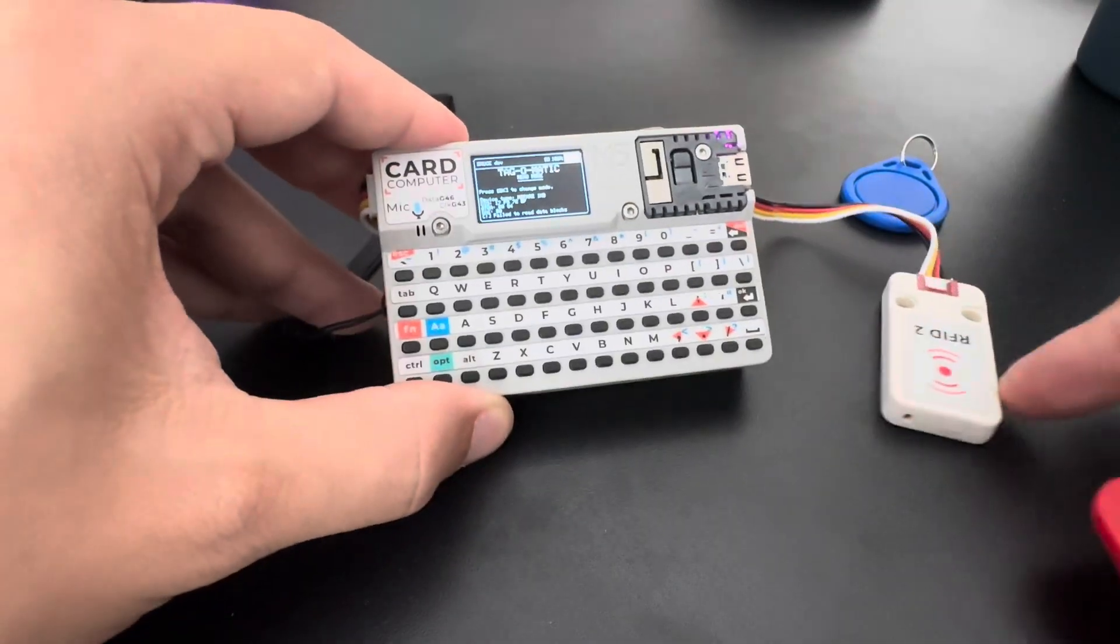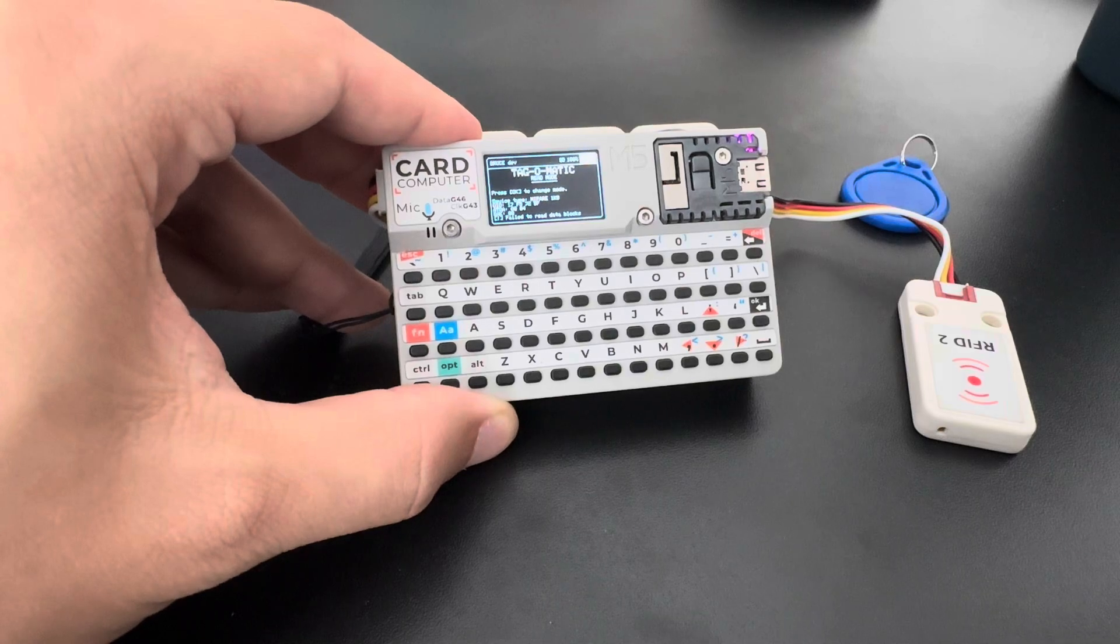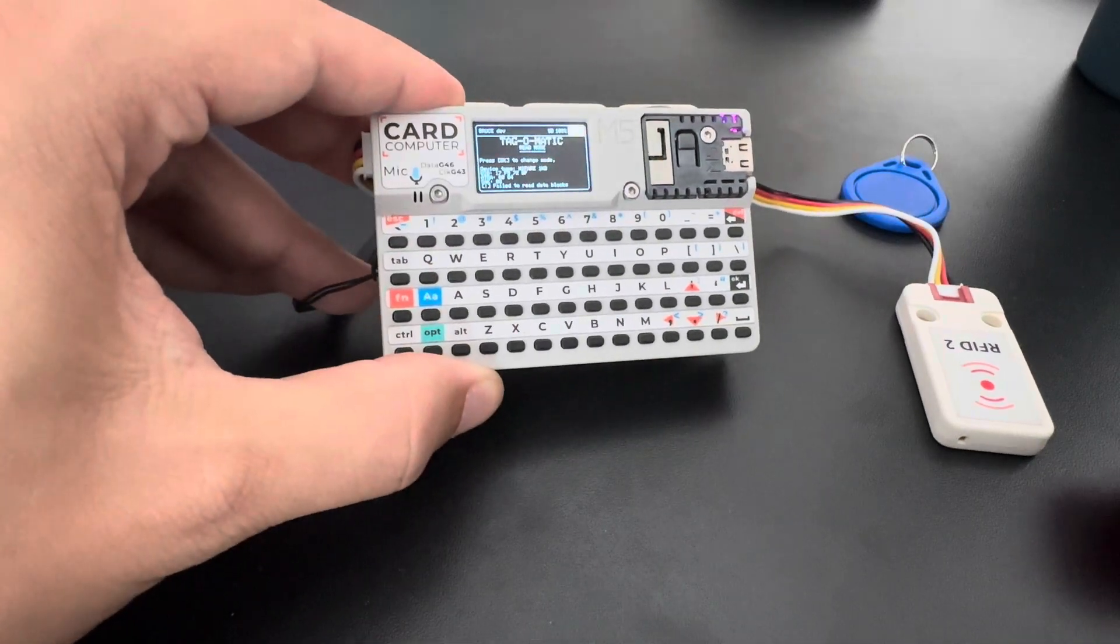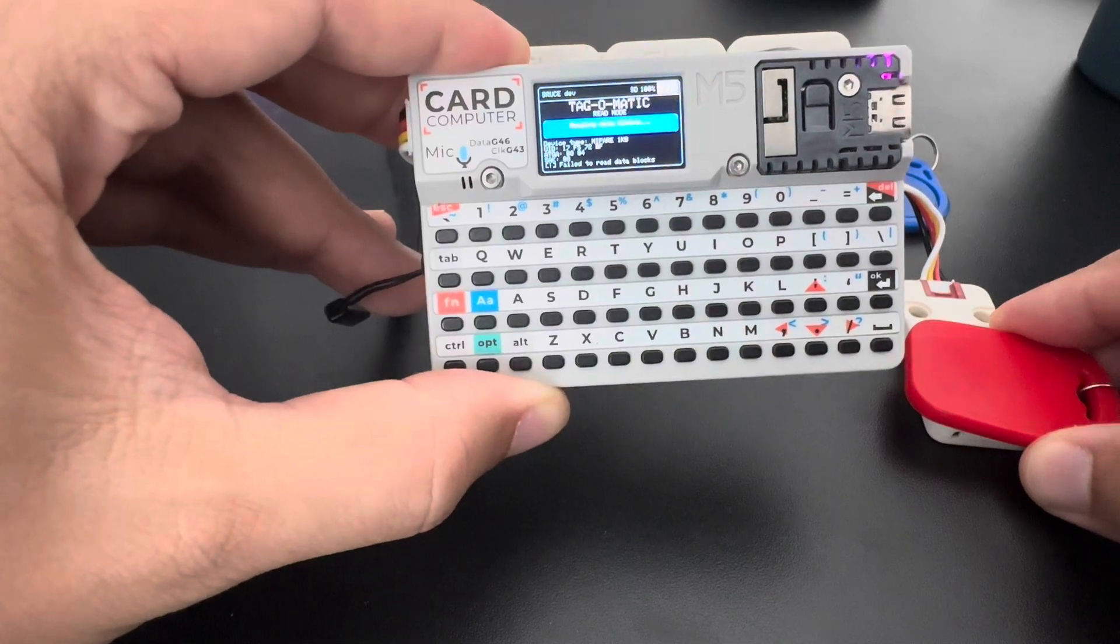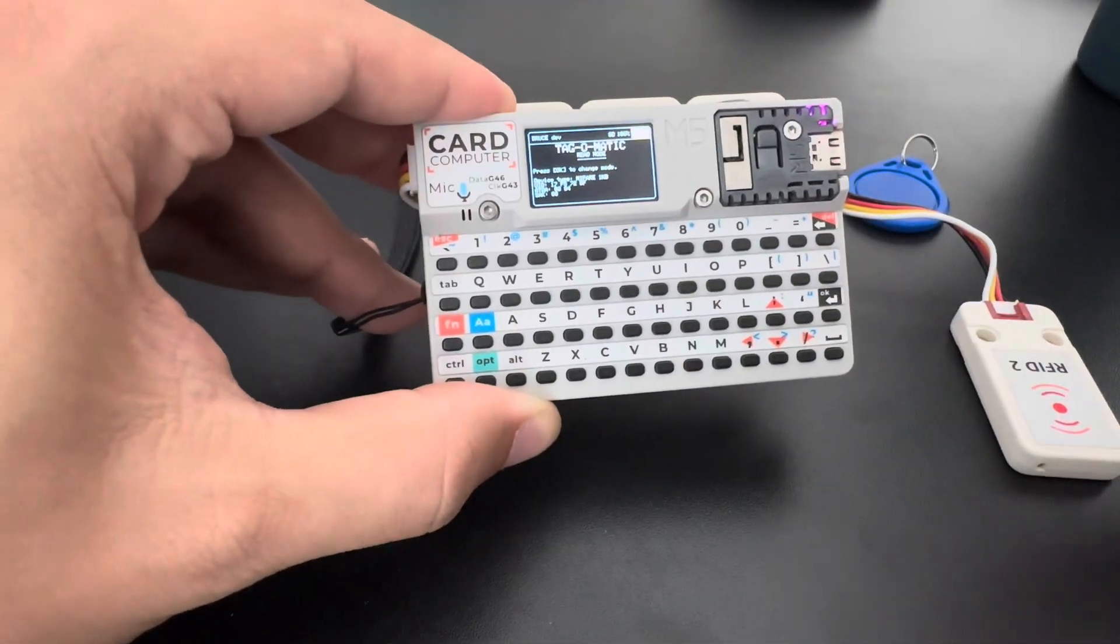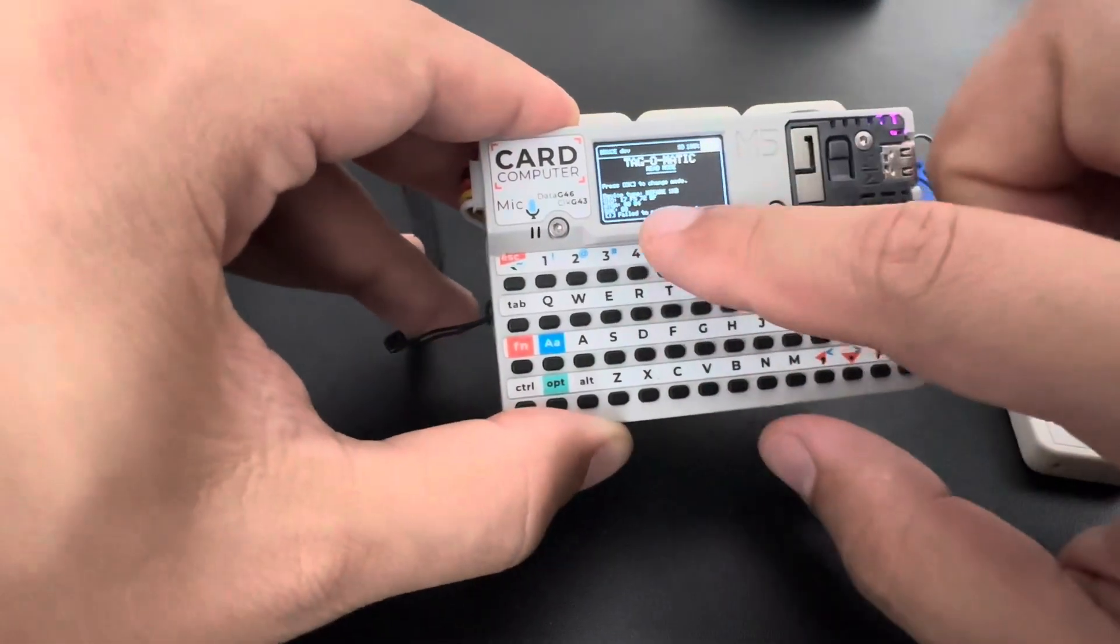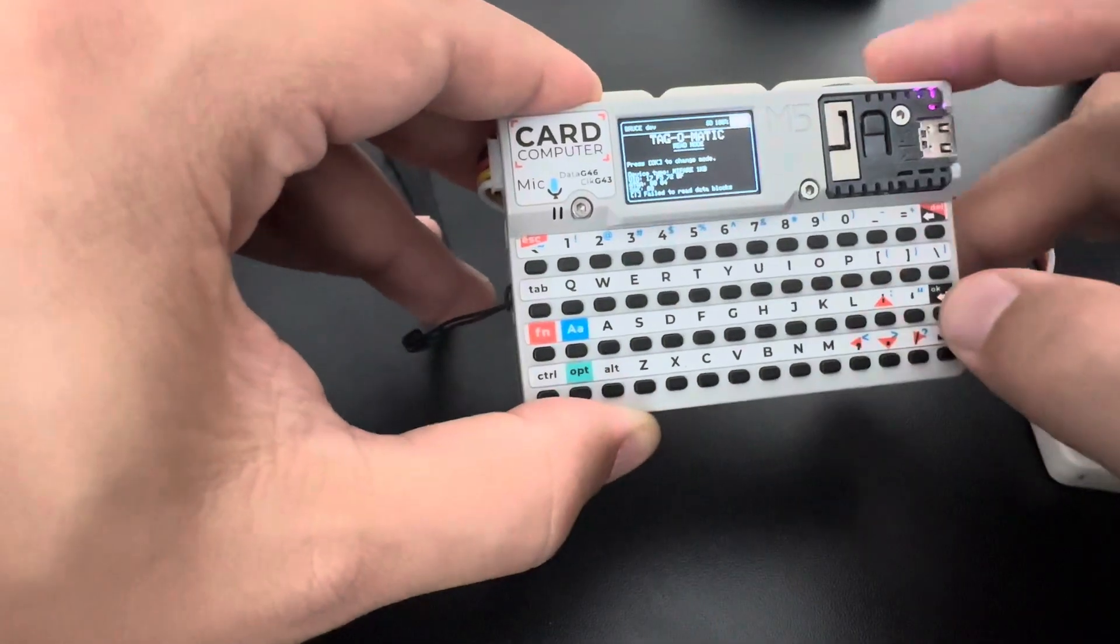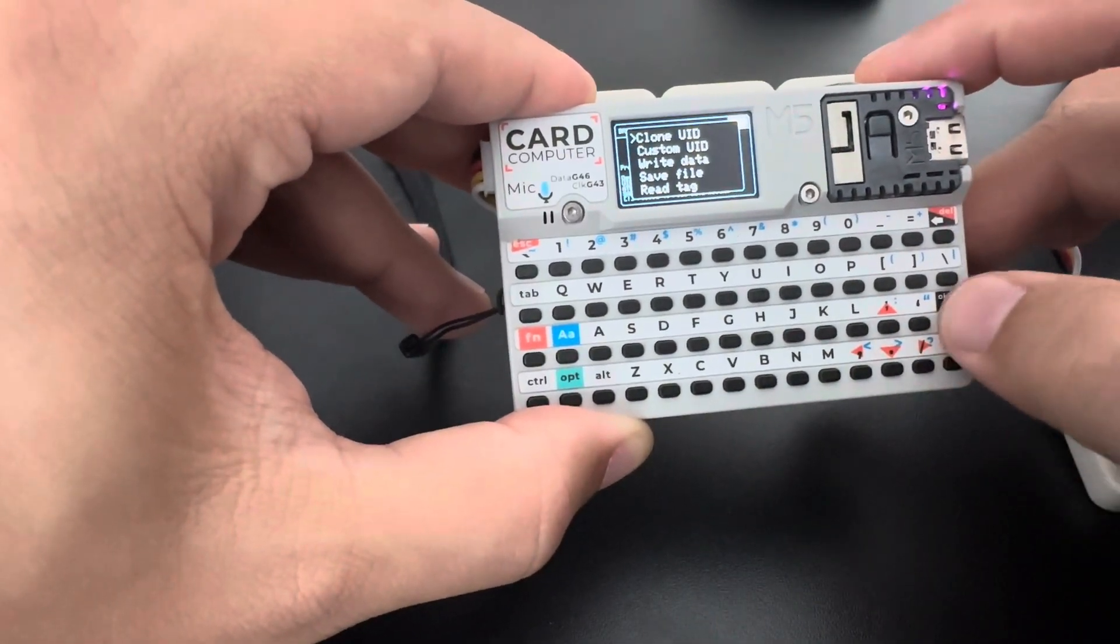I put the tag near the reader and took it off quickly, so I have to put it here and wait for the data blocks to be fully read. For the purpose here I don't need it, so I can do this and it's fine. I just need the UID. Let me click OK and I want to clone the UID.